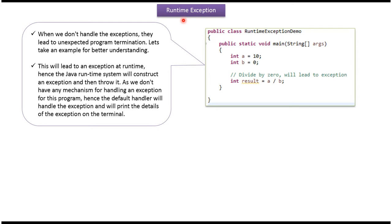Hi, in this video tutorial I will cover RuntimeException. Here I have defined the class RuntimeExceptionDemo. It has a main method. Inside the main method I am dividing A by B. A is 10, B is 0, so this line will throw an ArithmeticException.